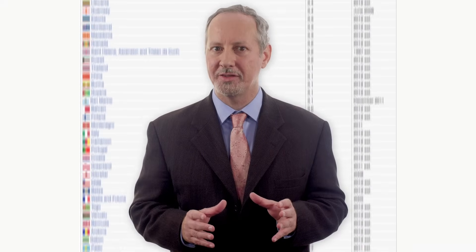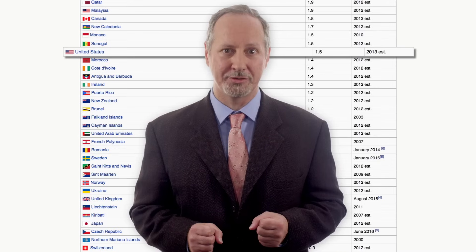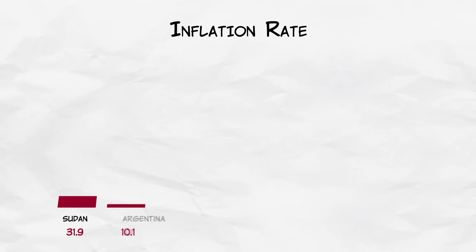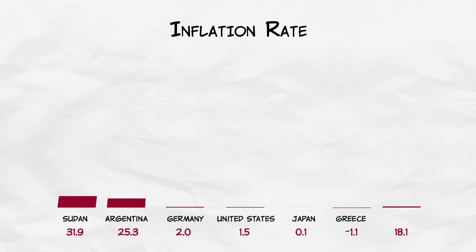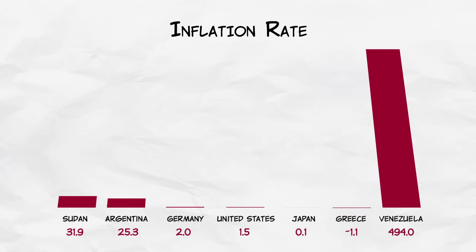Even in the 1970s, the United States has had a relatively low inflation rate by world standards. As a point of comparison, let's consider Venezuela today. In Venezuela, the inflation rate in 2015 hit 180%, and it didn't stop. It's estimated that in 2016, the inflation rate in Venezuela will hit 500% or even higher.